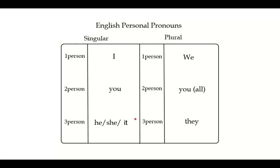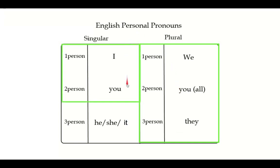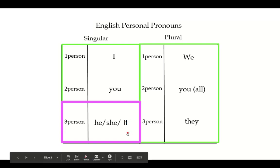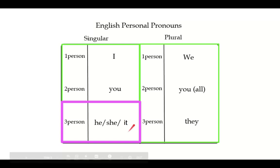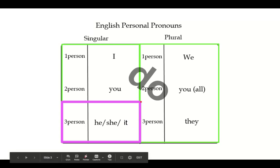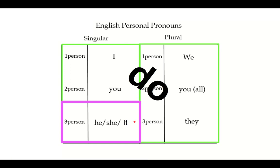Let's look at personal pronouns again — there's singular and plural. Singular (just one): I, you, he, she, it. Plural (more than one): we, you, they. For the plural and most singular forms we use 'do,' but for third person singular — he, she, it — we use 'does.'